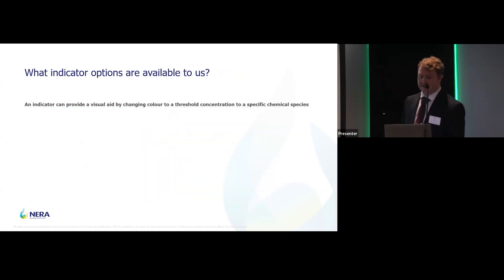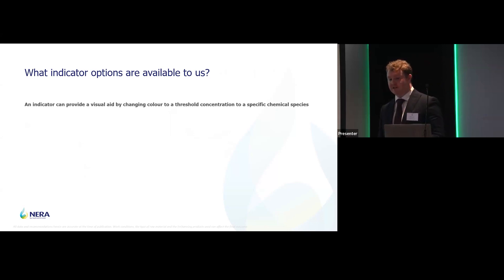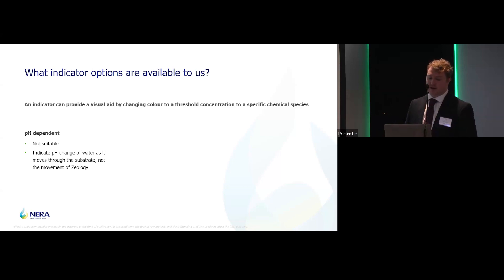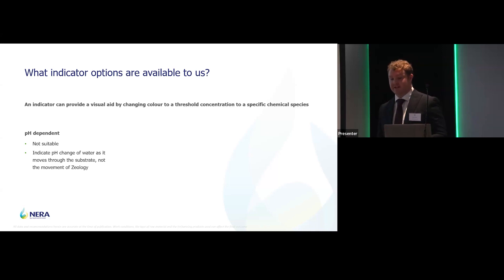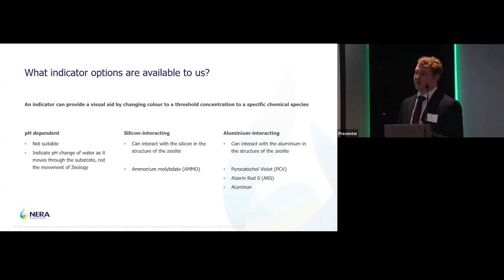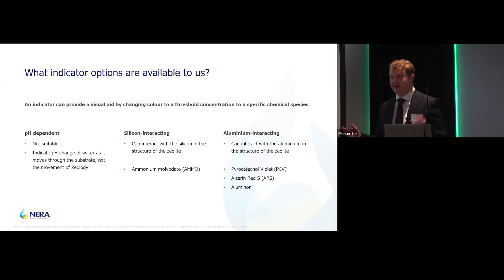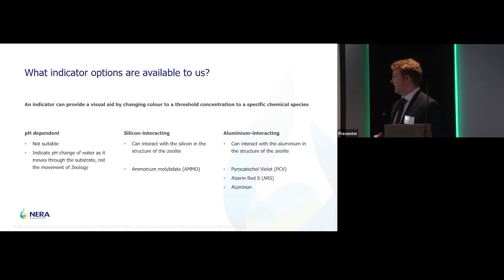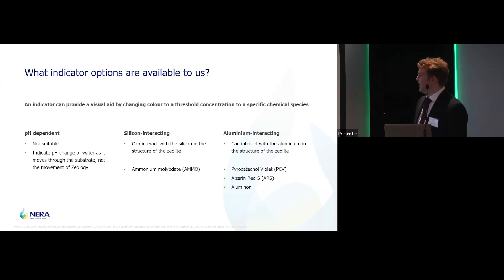The most obvious thing to use is an indicator — something that will change colour in response to a specific chemical species. For example, pH-dependent indicators like bromocresol green or phenolphthalein respond to the concentration of the hydronium ion. Sadly, though, they're not useful for us in this instance because they tell you where the pH is within that cross-section, not where the zeology is. So what are we left with? We're left with the elements that constitute our zeology — silicon, oxygen, and aluminium. Oxygen we can't use because it's everywhere; it doesn't give us any specificity towards zeology. So we're left with silicon and aluminium. The list of indicators tested for aluminium is much longer — about triple the size — compared to silicon, simply because of the nature of silicon as an element. It doesn't interact with quite as many things, so that list is shorter.